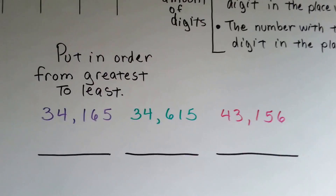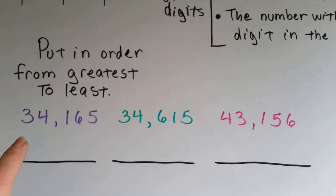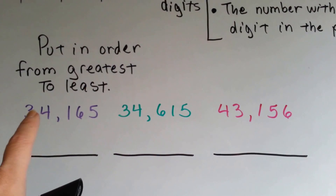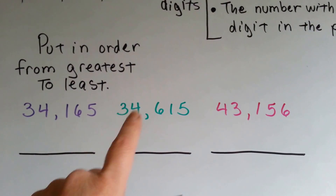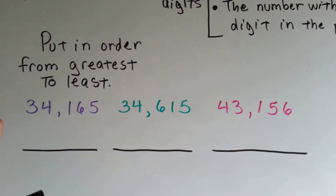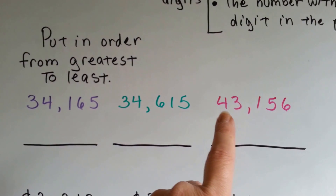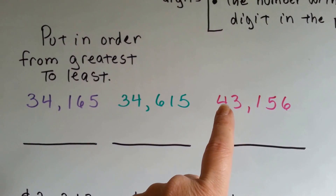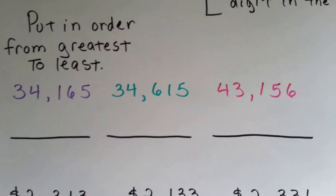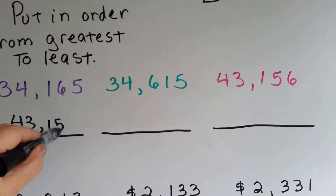So let's take a look at these. If we needed to put these in order from greatest to least, the biggest number needs to go first. They all have a three and a four, and they all have five place values. Which one goes first? If you said the pink one, you're right, because the four is in the ten-thousands and it's much bigger than the three in the ten-thousands. So that one's going to go first: 43,156.